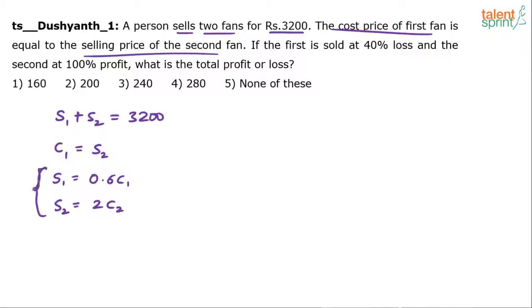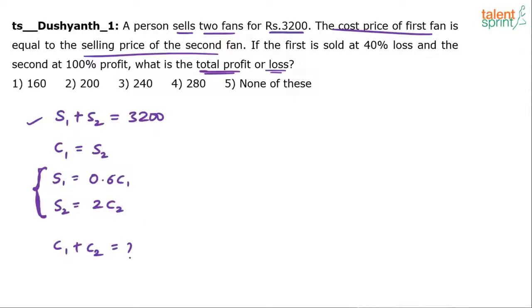We have learned enough about this in our profit and loss videos. To find total profit or loss, we need the total selling price, which is given as 3200, and the total cost price C1 plus C2. If we can find C1 plus C2, the difference between the two gives the profit or loss. So we need to find C1 plus C2 by working with these equations.